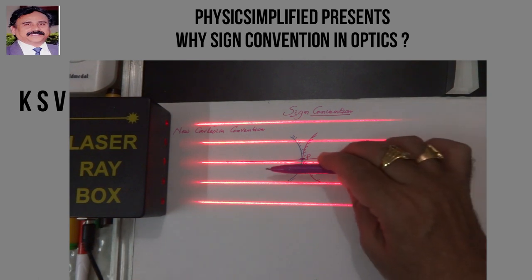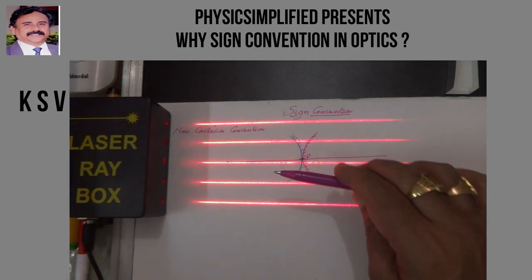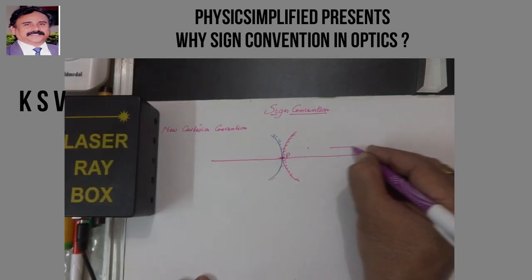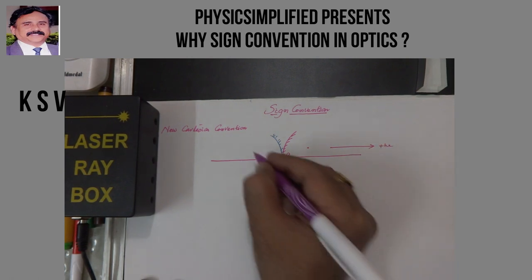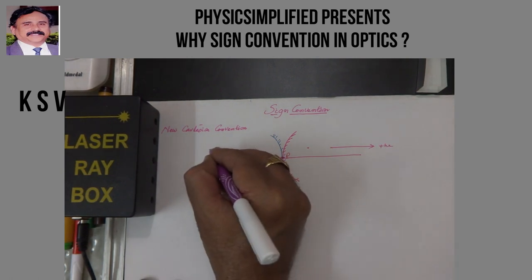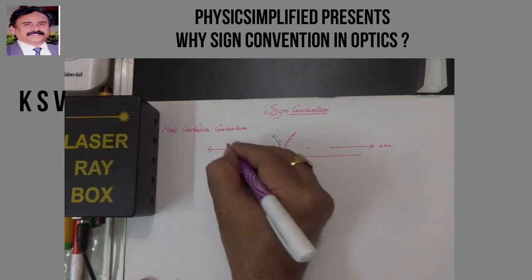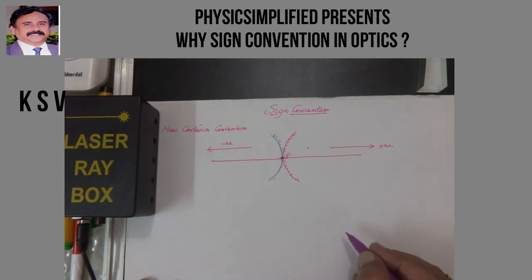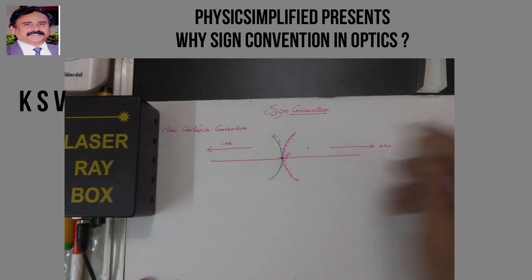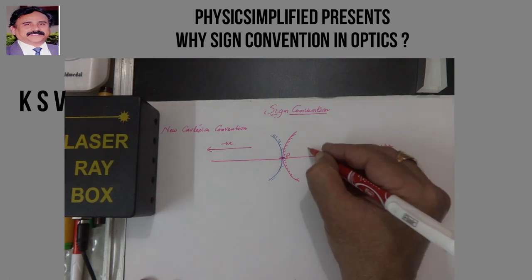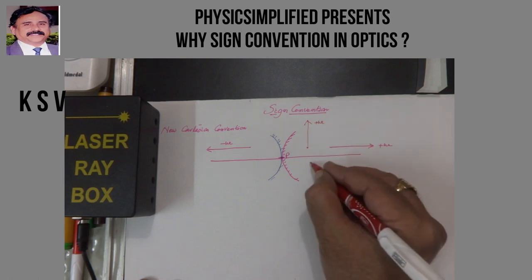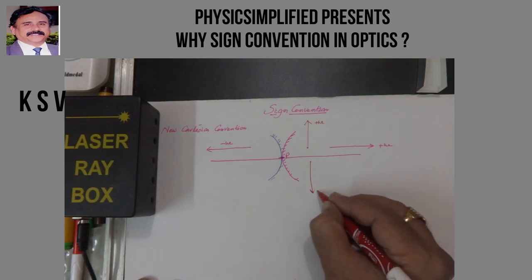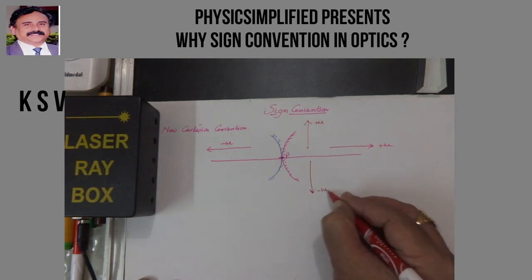If I go opposite to this direction, then it is negative. So these directions are positive and the measurements taken in the opposite directions are negative. Similarly, when we take the upward directions they are all positive, and downward directions are all negative.